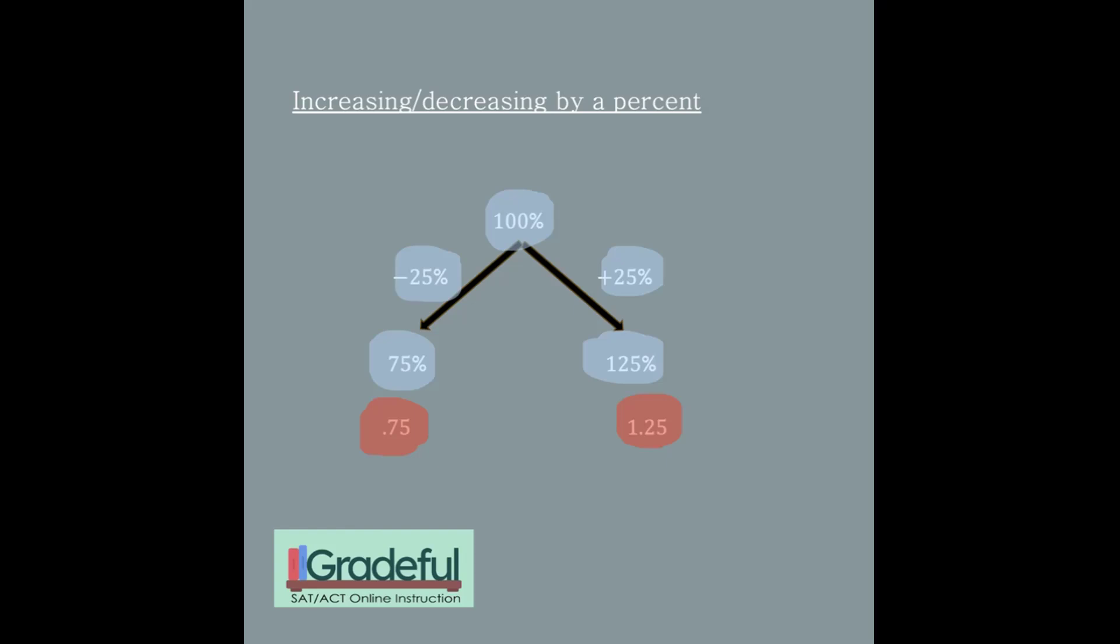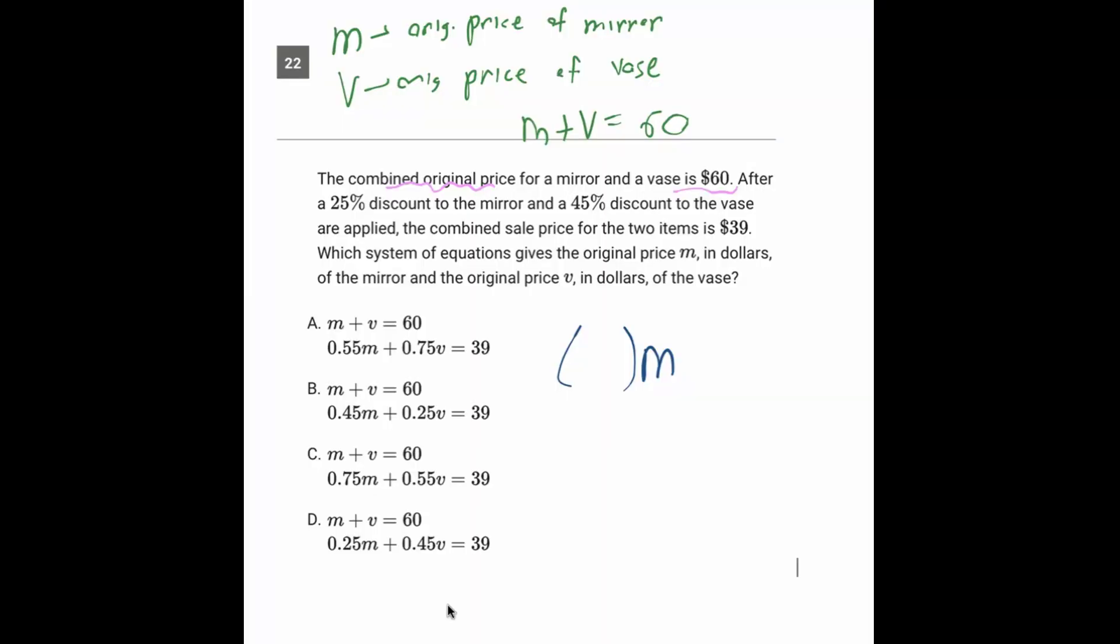And if I'm going to lower something by 25%, I'm going to multiply it by 0.75. So coming back here, the mirror is being discounted 25%, so that's 0.75.